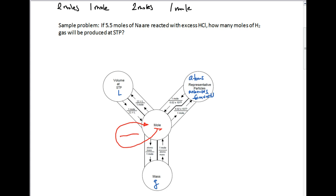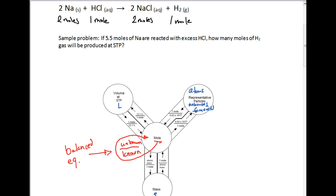We're going to start at the mole and add one more step where we go out and come right back to the mole. There's a conversion factor, just like there's always a conversion factor to go from one thing to another. If we ever need to go from one mole to a different mole of something, we put our unknown over our known. These numbers come from the coefficients of our balanced equation.